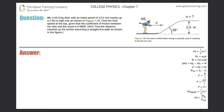Problem 24: A 60-kilogram skier with an initial speed of 12 meters per second coasts up a 2.5-meter high rise as shown in figure 7.39. Find her final speed at the top, given that the coefficient of friction between her skis and the snow is 0.08.